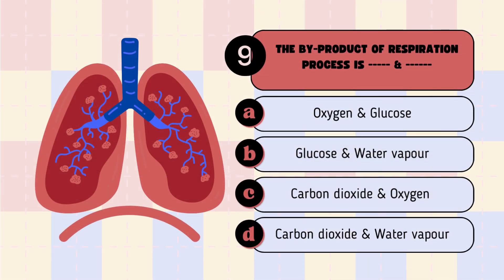Question 9: The byproduct or waste product of the respiration process is dash and dash. A. Oxygen and glucose, B. Glucose and water vapor, C. Carbon dioxide and oxygen, D. Carbon dioxide and water vapor.